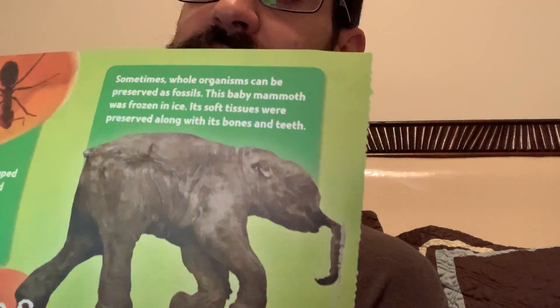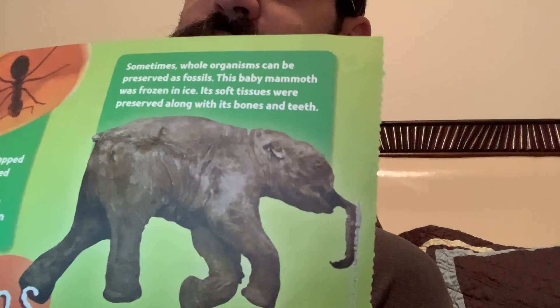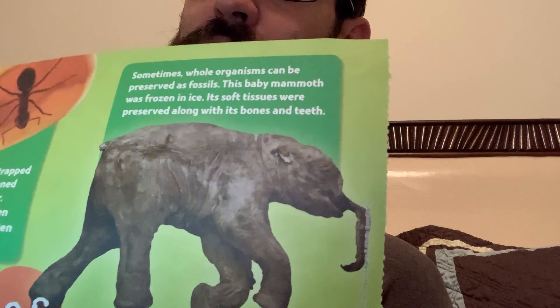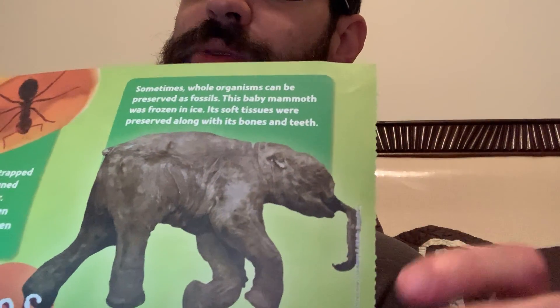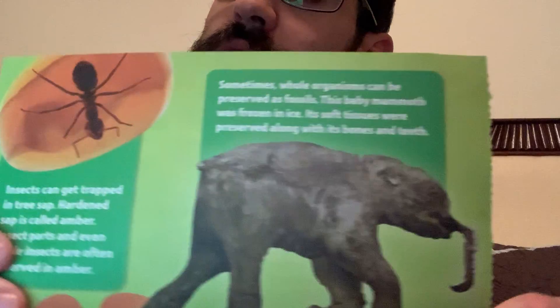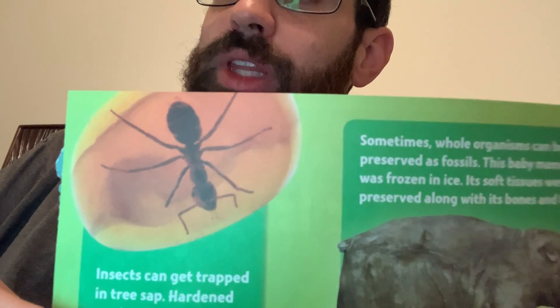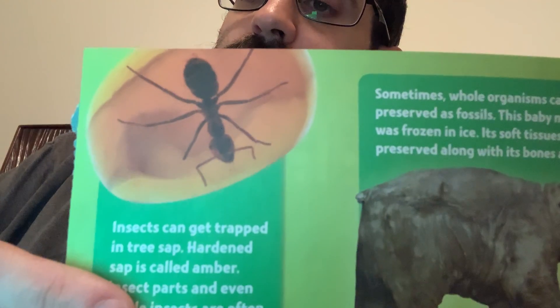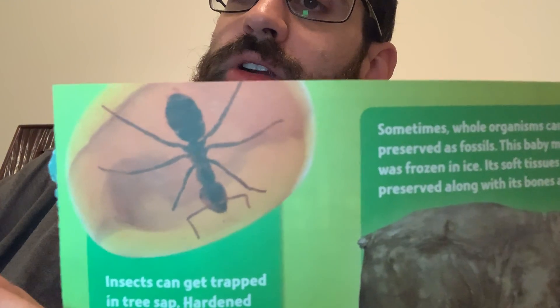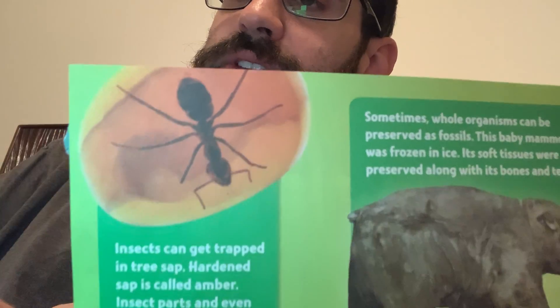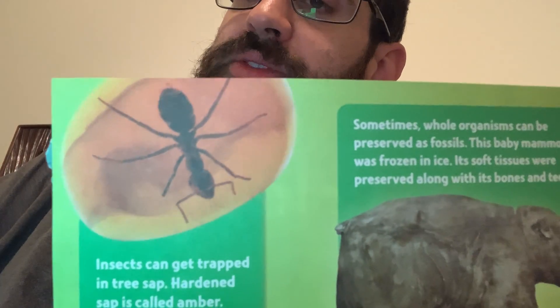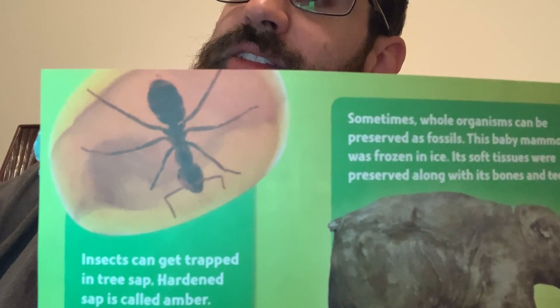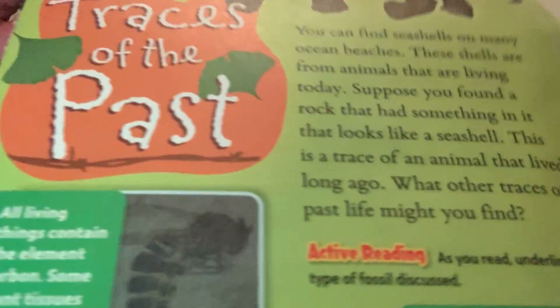We talked about how animals are preserved. One way is they're frozen. This is an ancient mammoth — a real mammoth that's frozen. This is very rare. Usually it's just the bones that are preserved, but because it was frozen so perfectly, the tissues and organs are preserved. Here's a picture of a mosquito in amber. Amber is when tree sap hardens over millions of years, so the mosquito or other types of insects get trapped in that sticky sap, and that can preserve them.